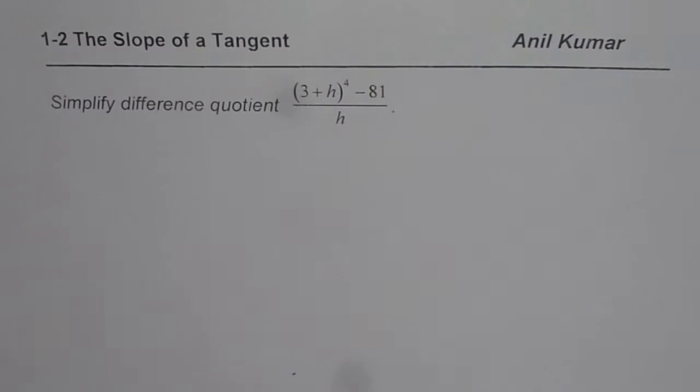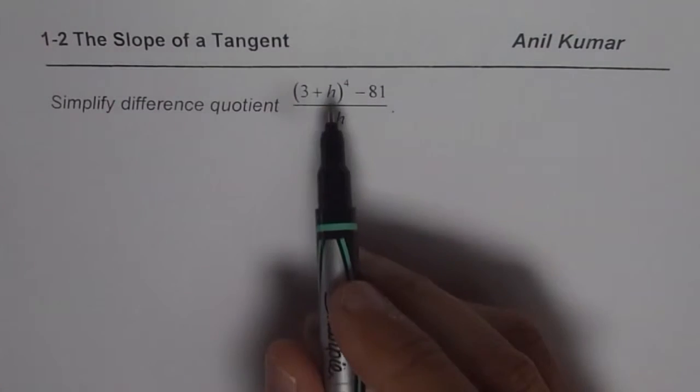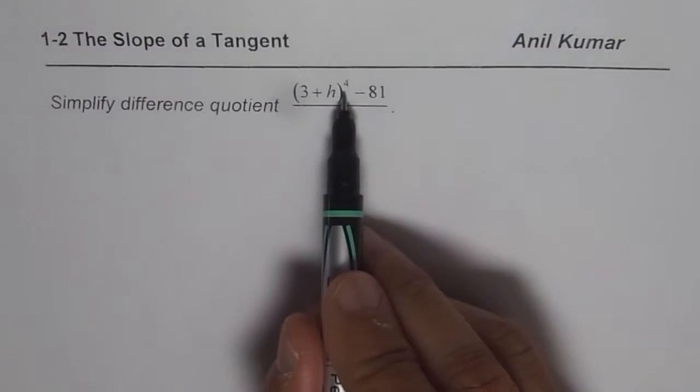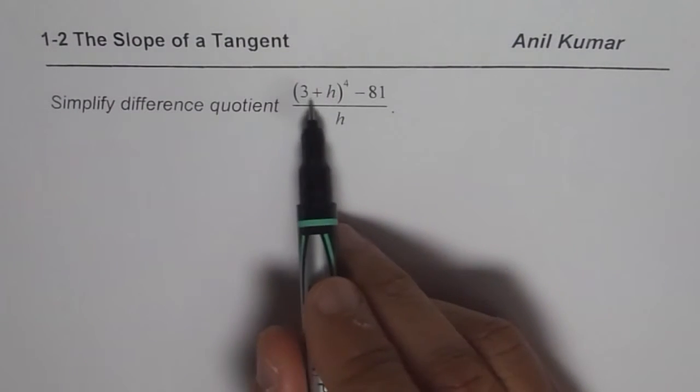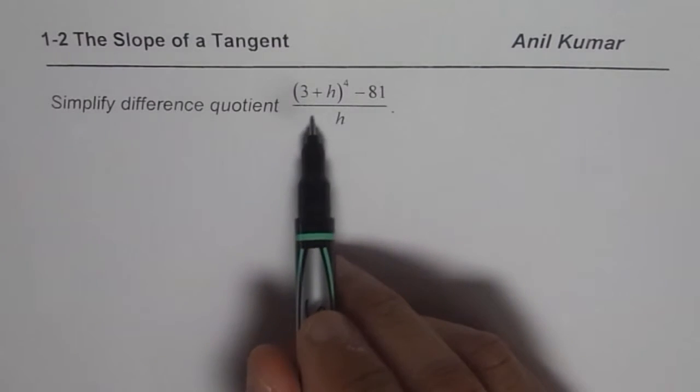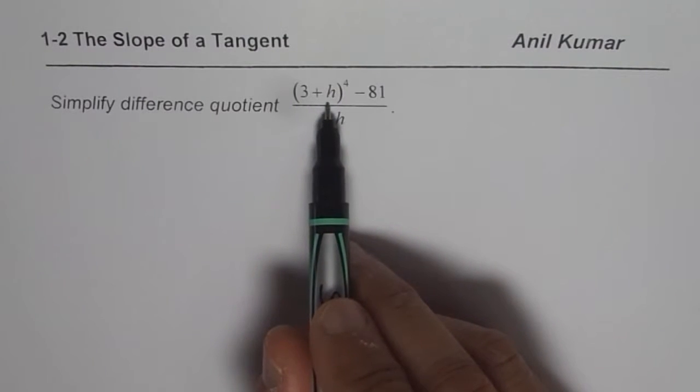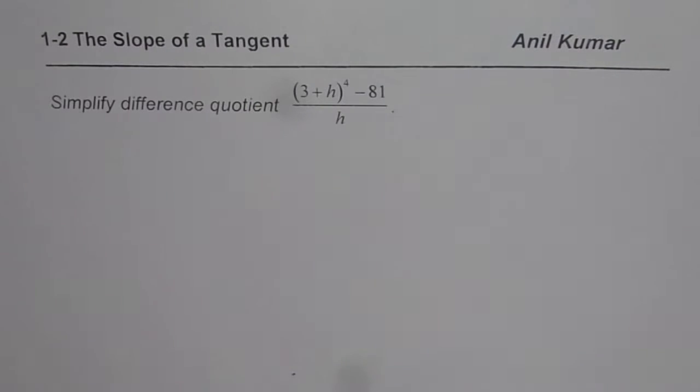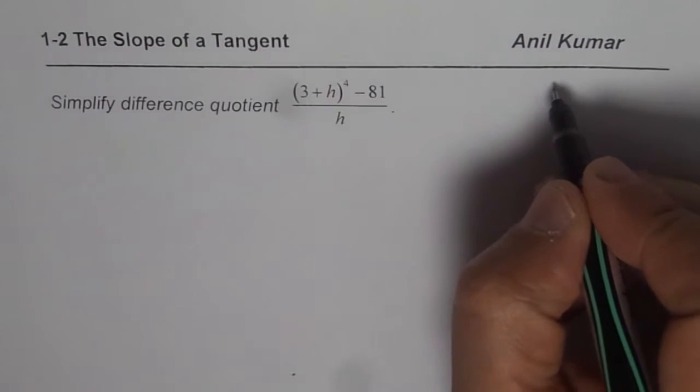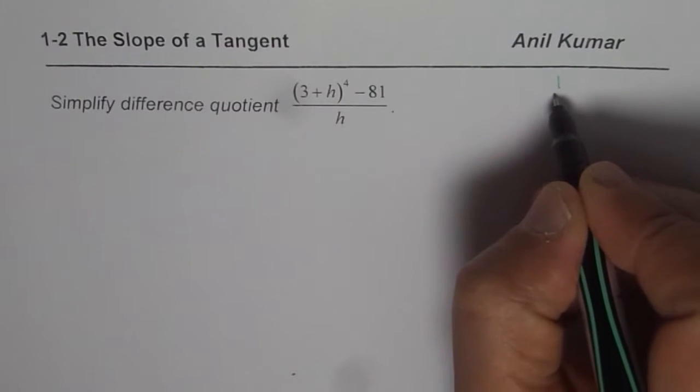You might get in your test such expressions where the exponent could be 4, 5, 6, a much higher number. Now it is difficult to remember how to expand this, right? If it was 3 plus h whole square, you could have easily expanded. Now to expand such binomial expressions with higher degree, what should you use? Pascal's triangle. So Pascal's triangle is the key here.